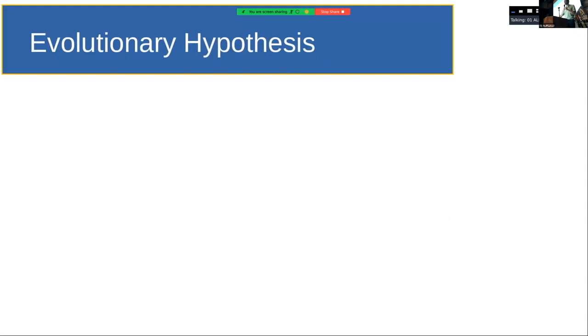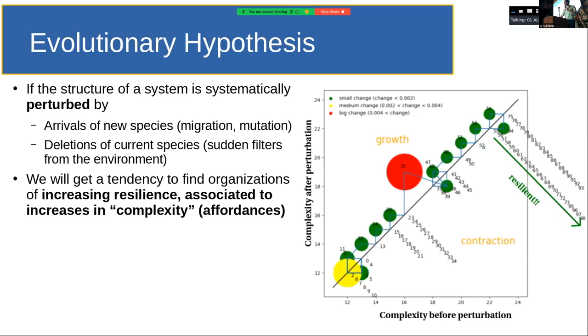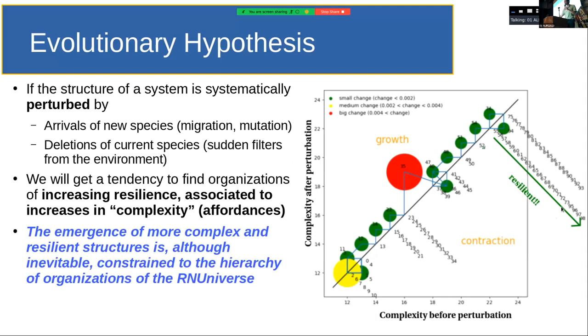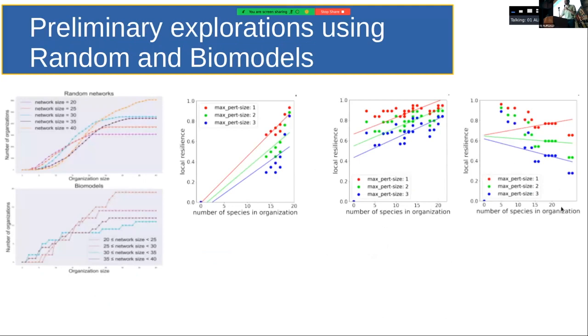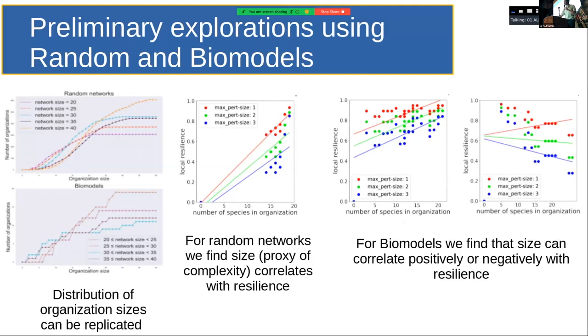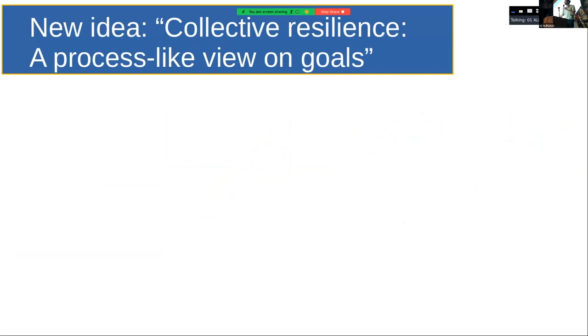So I will go very quickly to the evolutionary hypothesis and the little tests we have done, which is like if you look at the complexity, we have proxies for complexity, also many measures. And if you look for the dynamics of perturbations, you will find that the system kind of grows in complexity and remains for more iterations in those states. And so we have found examples with the biomodels and randomly generated networks, and we have compared these things. We find that random networks kind of correlate complexity with resilience very much, but real or biomodeled networks don't do so that much.